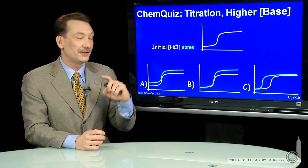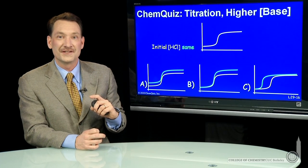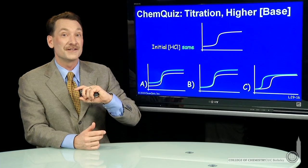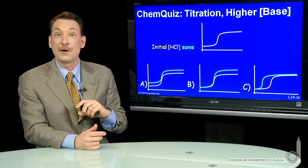Well, the initial HCl concentration is the same. So I'm titrating the same acid solution. So the starting point is the same. So A is out already.